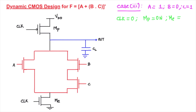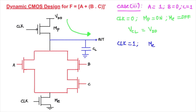With clock = 0, the MP pre-charge transistor is on and the ME evaluation transistor is off. The PDN path is completely disabled. The NMOS evaluation transistor at the bottom ensures no static power is consumed during pre-charge. Inputs to the gate can make at most one transition during evaluation. Since clock = 0, the evaluation phase does not work, and VCL is pre-charged to VDD.